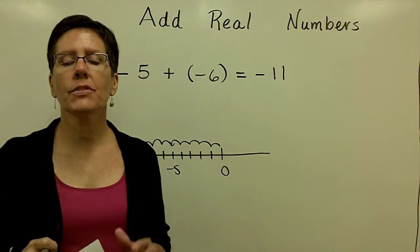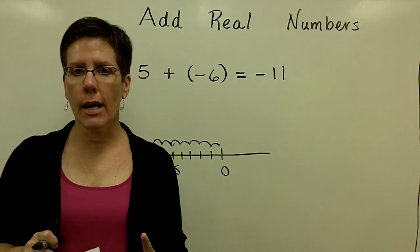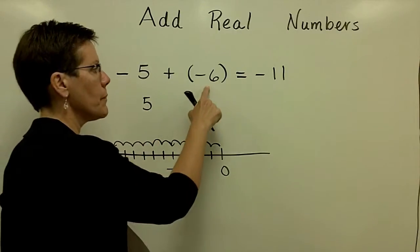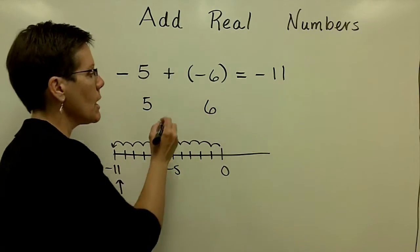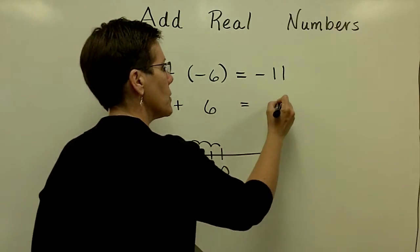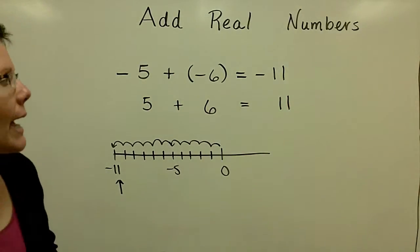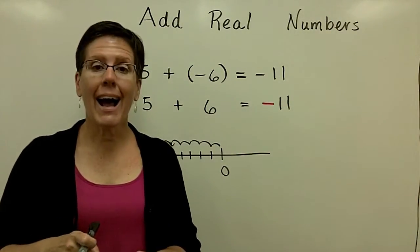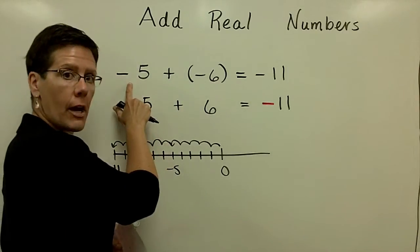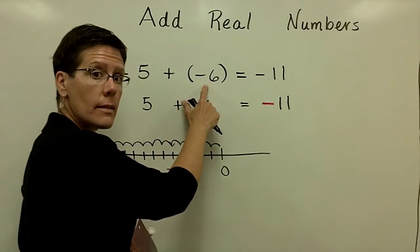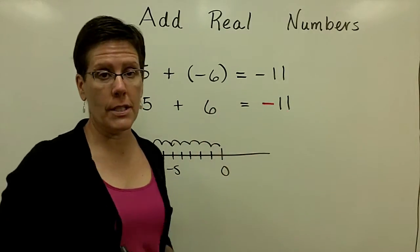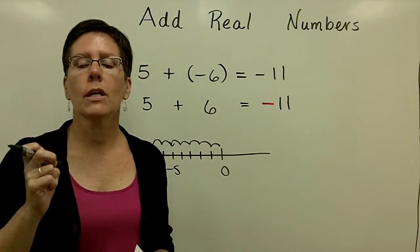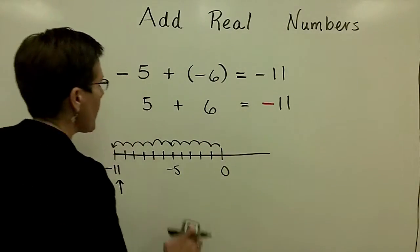When you have two numbers that have like signs, you need to add their absolute values. The absolute value of a negative 5 is a positive 5. The absolute value of a negative 6 is a positive 6. You need to add their absolute values and then apply the common sign that occurs with both of those two numbers. You can also approach this as: you have $5 of debt, you add $6 of debt, and you are even further in debt at negative $11. So if the signs are alike, add their absolute values and give your answer the common sign.